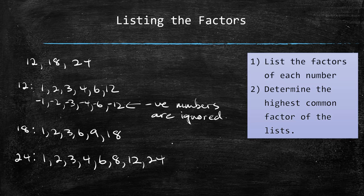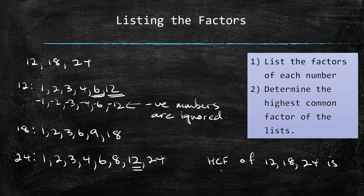Now we look at the highest common factor to all. The highest factor here is 12. There's no 12 in the 18 list, but we see a 12 in the 24 list. It is not common to all. We go down. The highest common factor here is 6. We see 6 here and 6 here. So the highest common factor of 12, 18, and 24 is 6.